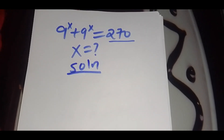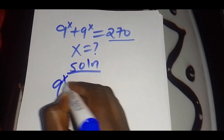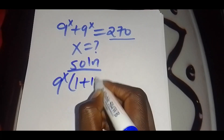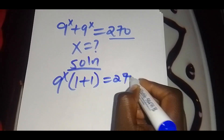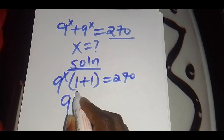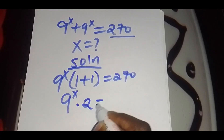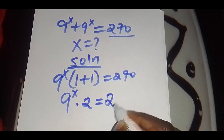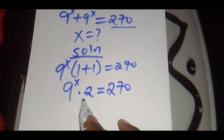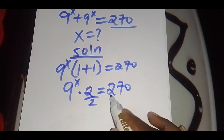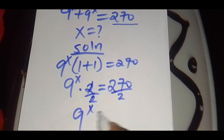As you can see, 9 raised to the power x is common, so we factor it out, so that we'll have 9^x times (1 + 1). This is equal to 270, so 1 plus 1 is 2, giving us 9^x times 2 equals 270. We divide both sides by 2.